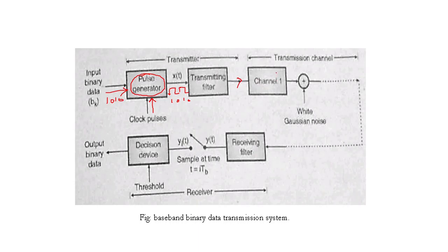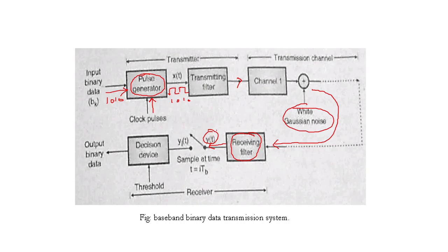In the channel, the signal may be influenced by white Gaussian noise, and there may be regenerative repeaters. The received wave comes to the receiver, where a receiving filter produces a distorted version of the input, called y(t). At every bit time interval, the decision device compares the amplitude to a threshold voltage: if y(t) is above the threshold, the output is binary one; if below, binary zero.